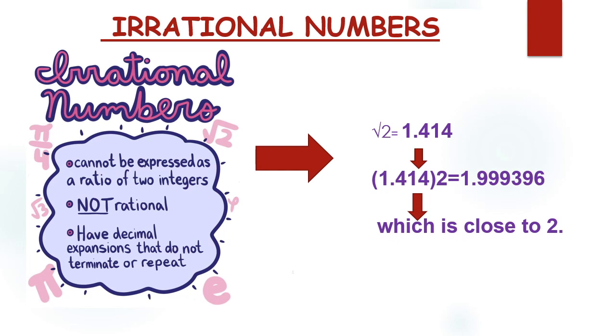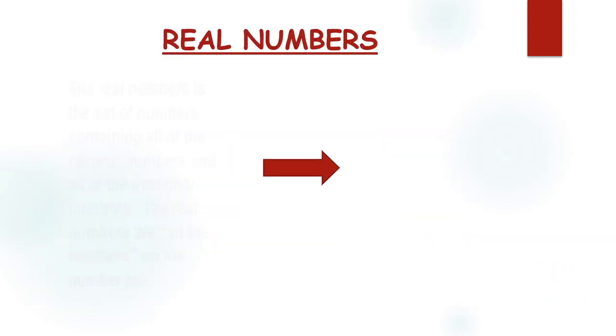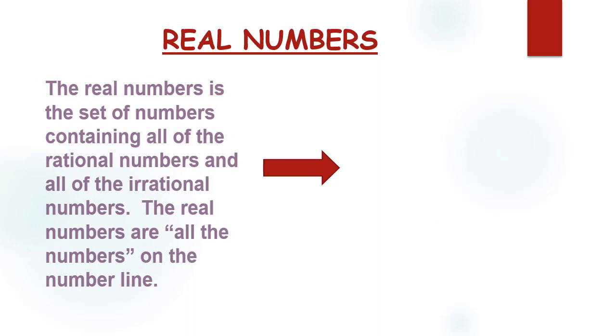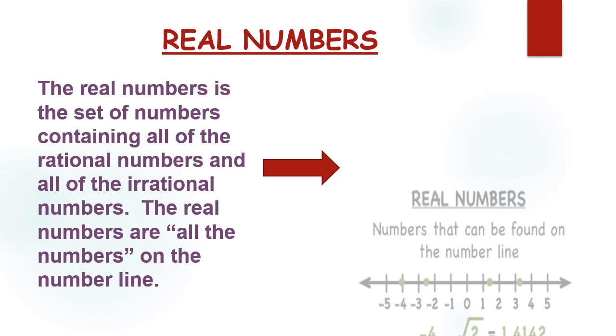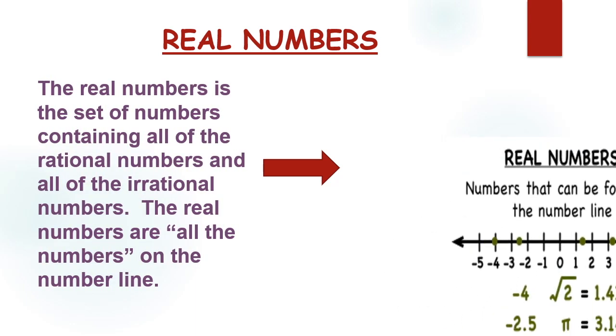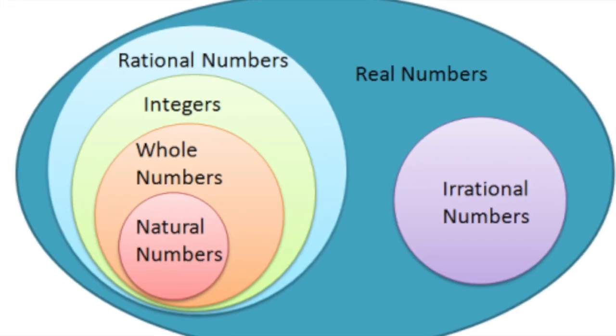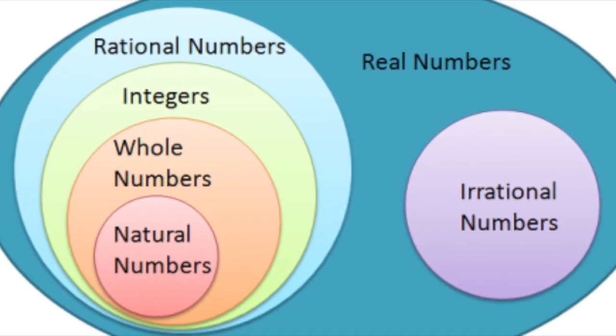Real numbers can be defined as the union of both the rational and irrational numbers. They can be both positive or negative and are denoted by the symbol R. All the natural numbers, decimals, and fractions come under this category.